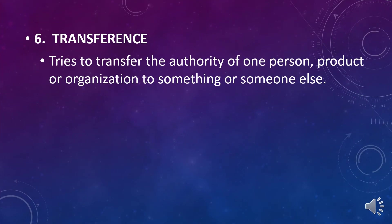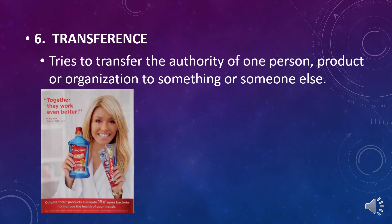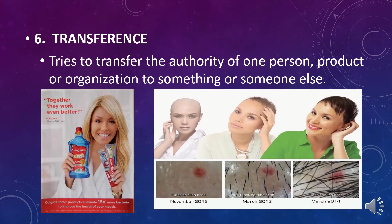The sixth one is what we call transference. It tries to transfer the authority of one person, product, or organization to something or someone else. For example, a dentist would promote or speak about a toothpaste product, or a person who uses a hair grower product.